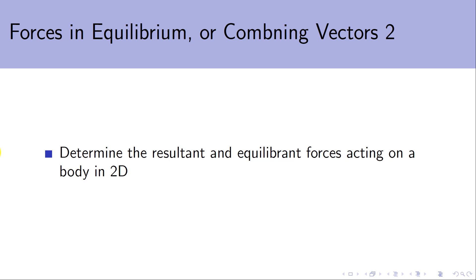In this session we're going to take a closer look at combining vectors, and we're going to do it in the context of looking at forces. So when we've got multiple forces acting on a body, how we can work out the resultant force acting on that body when they're all going at different angles, or if we've got a couple of forces acting on a body and one of them is unknown, but we know the body is in equilibrium, how can we work out what that force is?